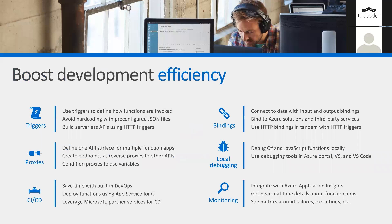In terms of efficiency, you build triggers — how you trigger a function. It could be an HTTP trigger, a database update trigger, a Blob Storage trigger, a queue trigger, an Event Hub trigger, or a time trigger. There are also proxies where you can define APIs and connect to endpoints, CI/CD integrations, and bindings to Azure services. You can also bind to different third-party toolsets.